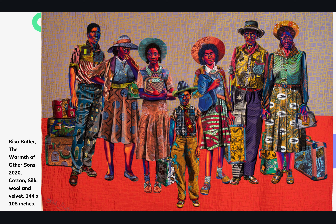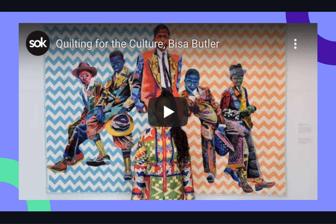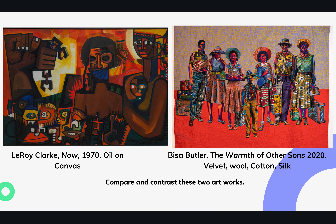What do you think Bisa Butler is expressing about the black family in this picture? If you would like to see more information or hear Bisa Butler talking about her work, you can watch the video 'Quilting for the Culture — Bisa Butler.' It is very informative and you can find it on YouTube. I want you to compare and contrast these two pieces of artwork: Leroy Clark's 'Now' and Bisa Butler's 'The Warmth of Other Suns.' How do the ideas and feelings of the painting 'Now' compare to the ideas of the textile 'The Warmth of Other Suns'?